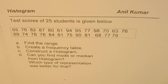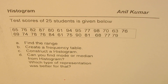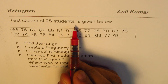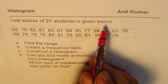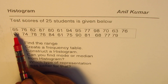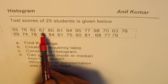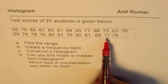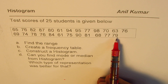I'm Anil Kumar and in this video we will learn how to create a histogram. Test scores of 25 students are given below: 65, 76, 82, 87, and so on till 77, 79.